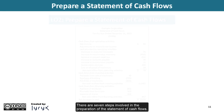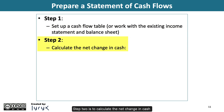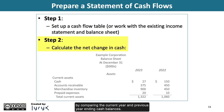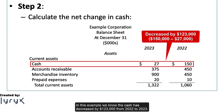There are 7 steps involved in the preparation of the statement of cash flows. Step 1 begins with setting up a cash flow table or working with the existing income statement and balance sheet. Step 2 is to calculate the net change in cash by comparing the current year and previous year ending cash balances. In this example, cash has decreased by $123,000 from 2022 to 2023.